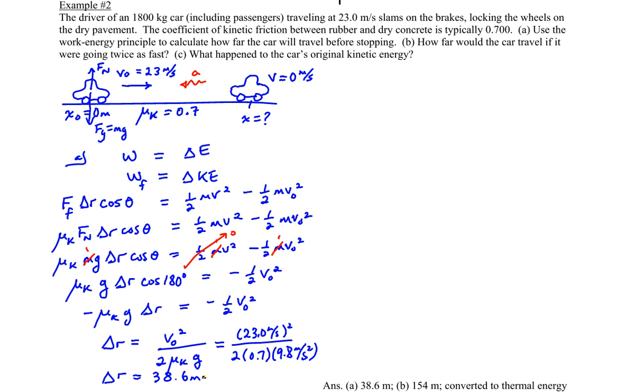Now we're asking for how far would the car travel if it were going twice as fast. And this is why I derived this all symbolically, because we can now go to this expression here, where we have delta R is equal to the initial speed squared divided by two times mu k times g, which gave us an answer of 38.6 meters. Now if the new velocity v zero, we'll call prime, is now twice as fast as the original speed, we're going to have the following.